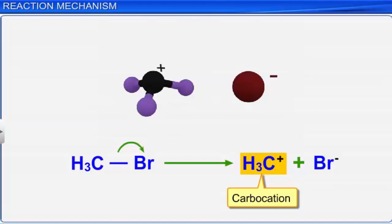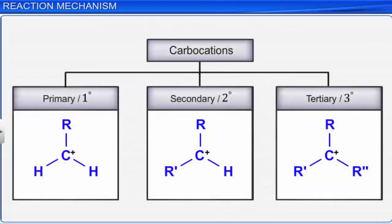Carbocations are very reactive as they have a strong tendency to complete their octet. Depending on the number of alkyl groups directly attached to the positively charged carbon, carbocations are classified as primary, secondary, and tertiary carbocations.